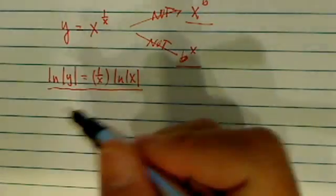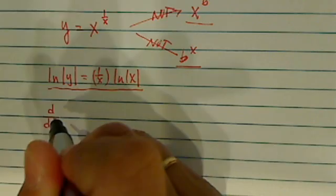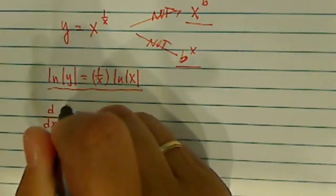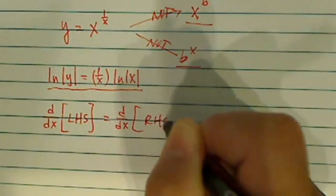We have to use implicit differentiation. Implicit differentiation is just a fancy word to say whenever you differentiate on the left-hand side, we're going to do d/dx on the right-hand side as well.